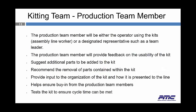Another member will be from the production team — either the operator using the kit, such as the assembly line worker, or a designated representative such as a team leader. The production team member will provide feedback on the usability of the kit, suggest additional parts to be added or recommend removal of parts contained within the kit, and provide input on the organization of the kit and how it's presented to the line. This person helps ensure buy-in from the production team members and tests the kit to ensure the cycle time can be met on the line side.